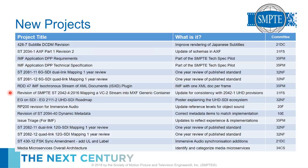Next is a revision of ST 2042 Part 4, which is the mapping of VC-2 into MXF. As the high dynamic range ecosystem moves through different compression and carriage standards, many of those standards need to be updated for UHD, wide color gamut, and high dynamic range. VC-2 — popularly known as Dirac — is being updated to carry properties for wide color gamut and HDR.